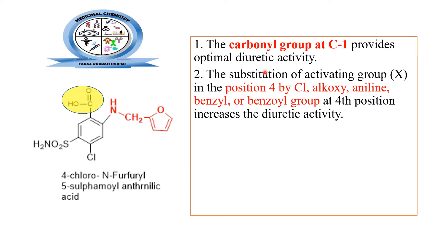Position 4 of the loop diuretic can be substituted with a halogen like chlorine, alkoxy, aniline, benzyl, or benzoyl functional group. Substitution at the fourth position with any of these groups enhances diuretic activity. In furosemide, chlorine — a halogen — is present at position 4, and this is essential for the activity.